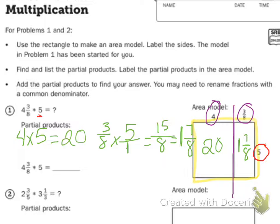So what is my answer? You could have 20 and 15 eighths, or 20 plus 1 is 21, and 7 eighths left over.